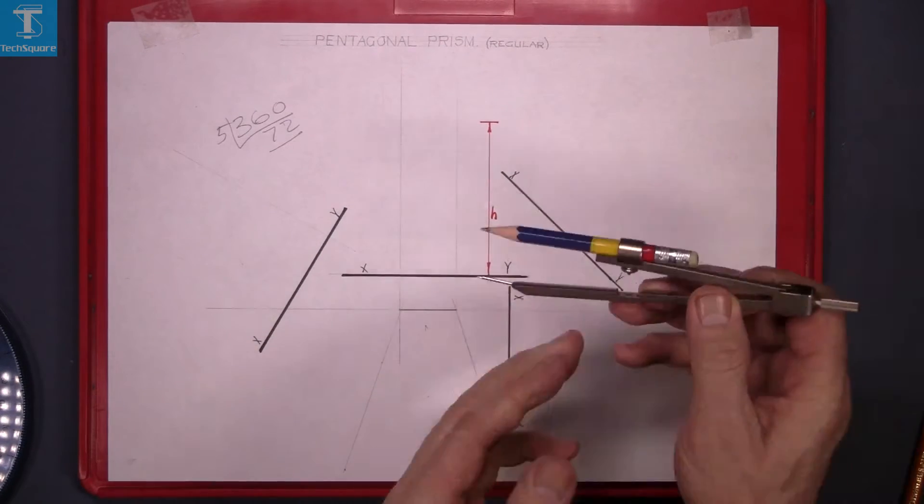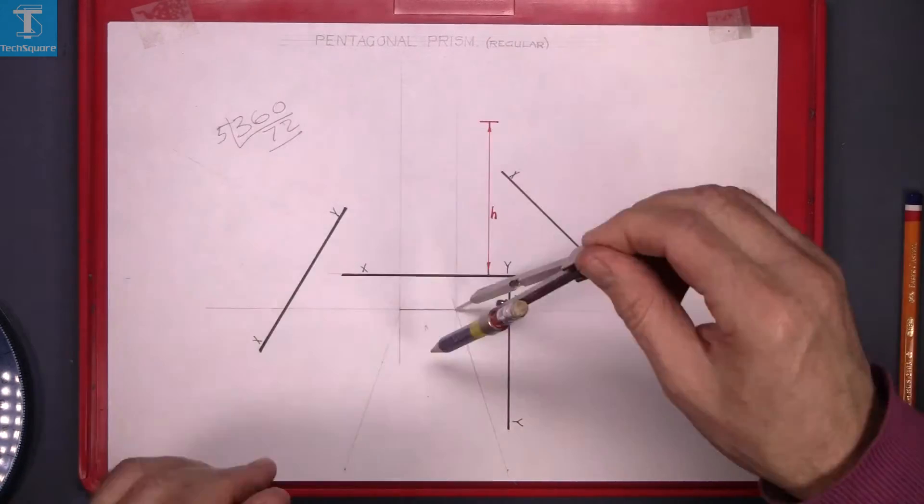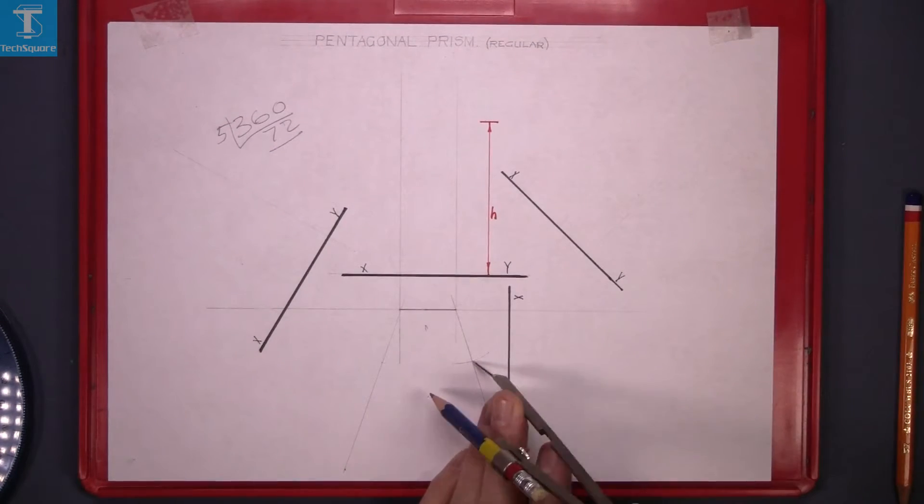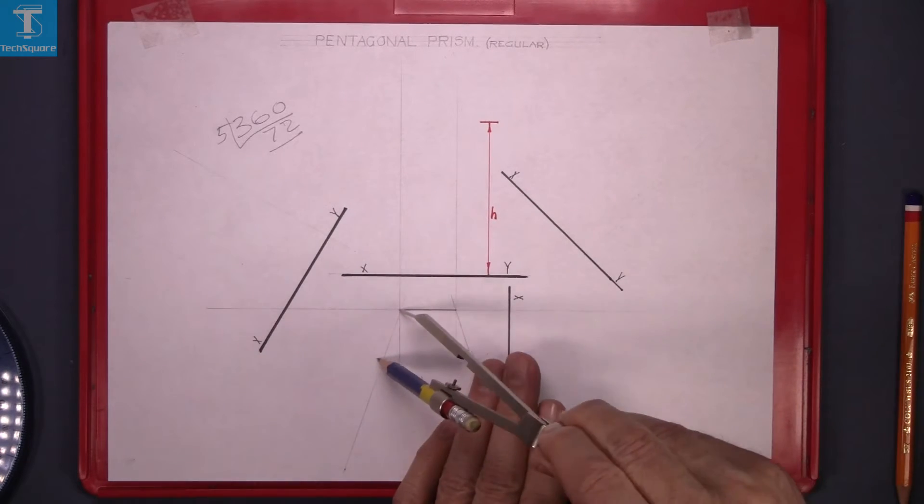Now we have to step the length of that line off. So set the compass to the length of the line, mark an arc and do the same again and repeat the same on this side.